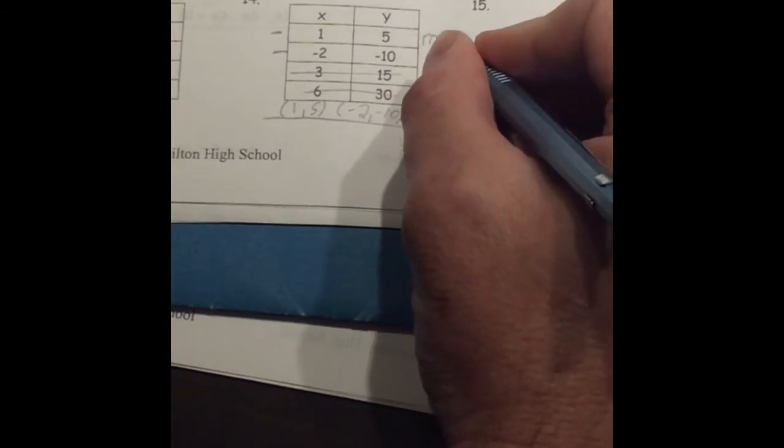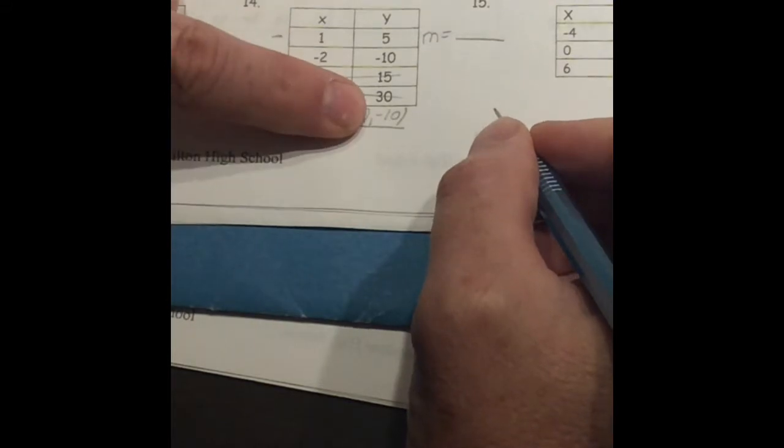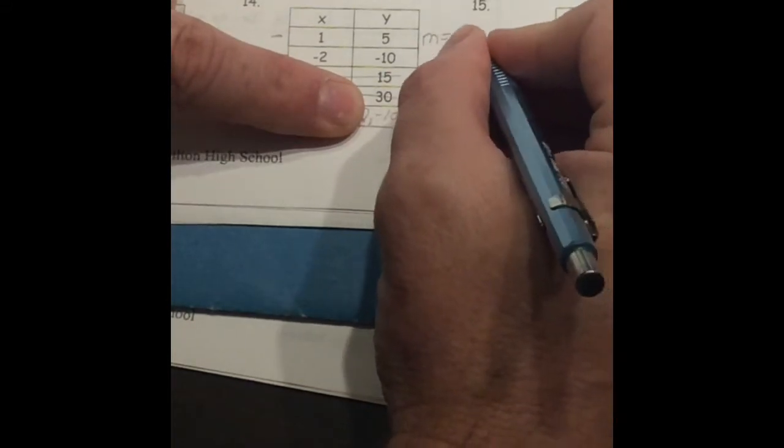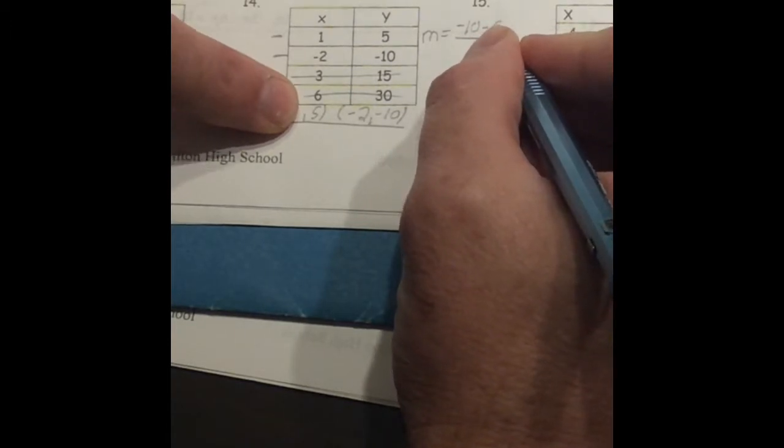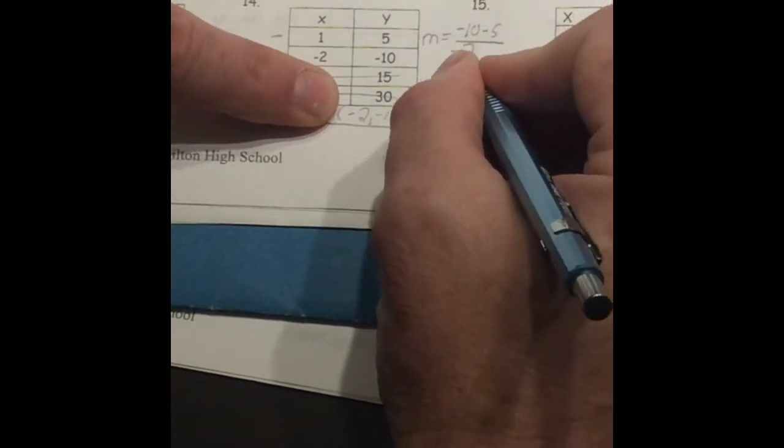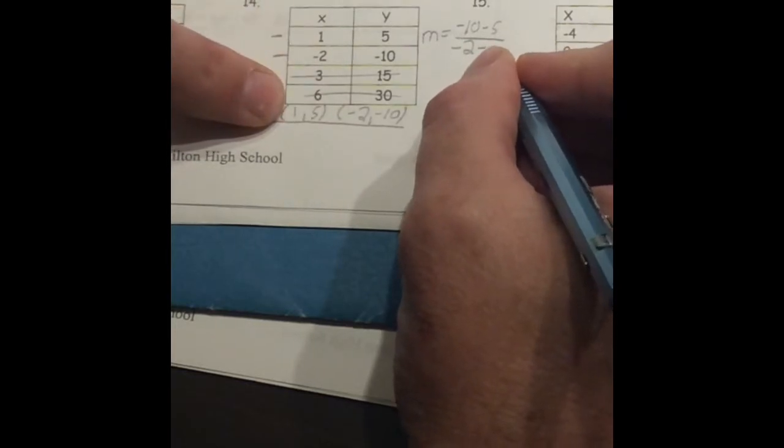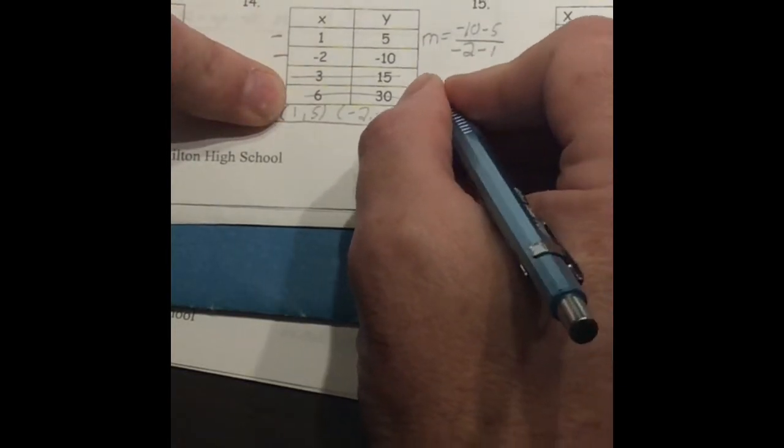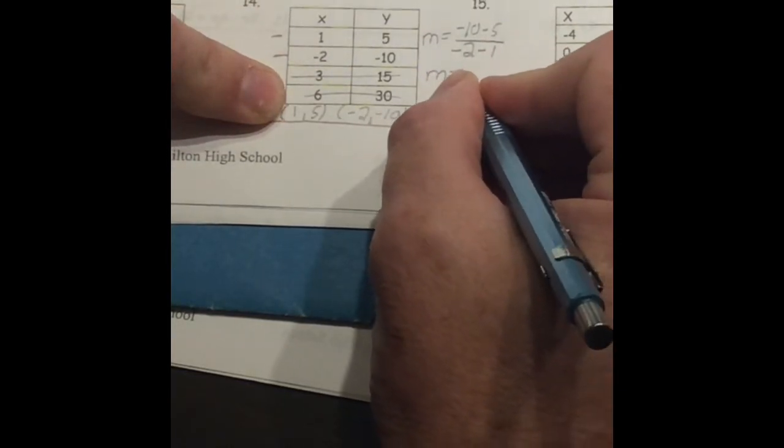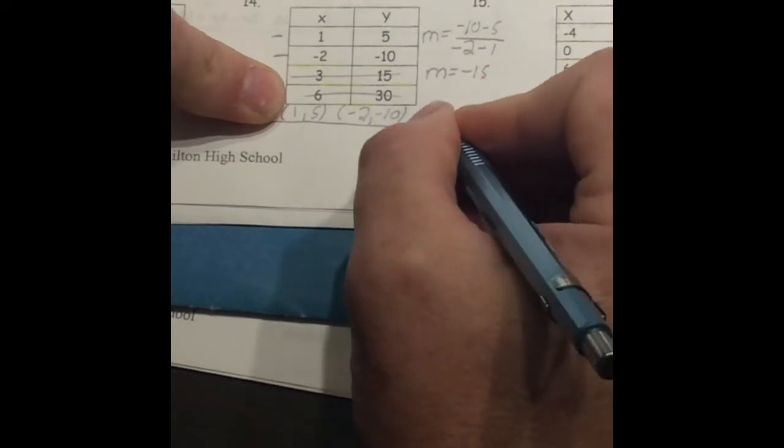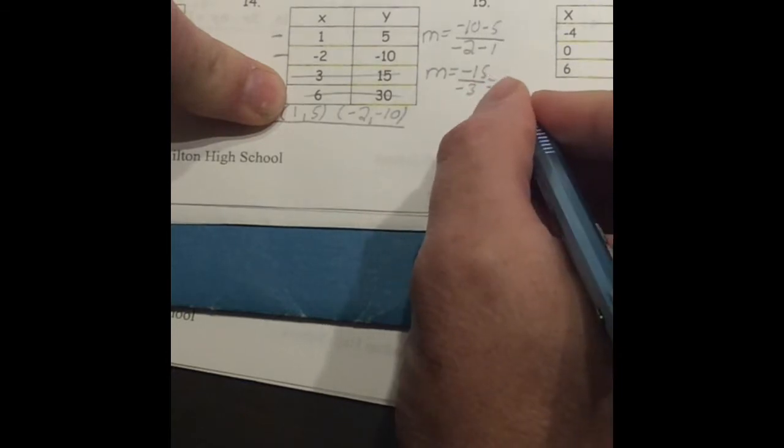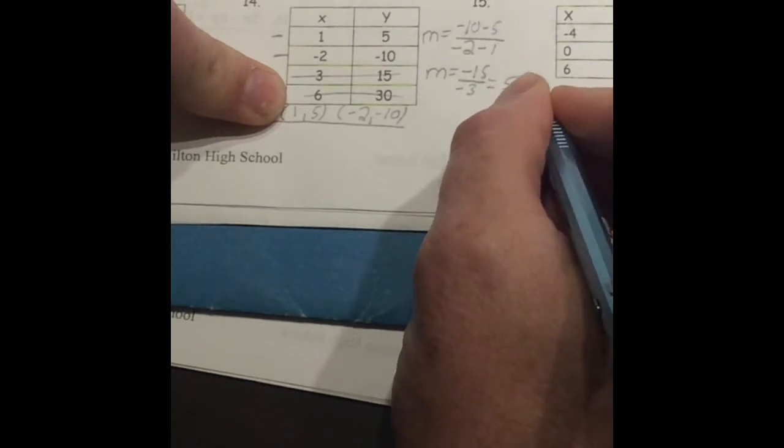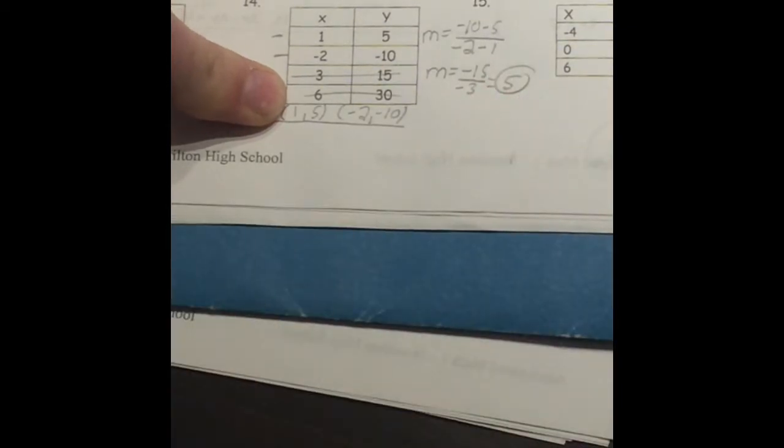All right. I'm going to come out over here. I'm going to figure out the slope of that line, the same method we used up top. I'm going to take my second line, which is negative 10. I'm going to subtract my first Y, which is 5. My second X, which is negative 2. I'm going to subtract my first X, which is 1. And if I do this, I get negative 15. That's negative 10 minus 5 over negative 3, which is negative 2 minus 1, which gives me a slope of 5.